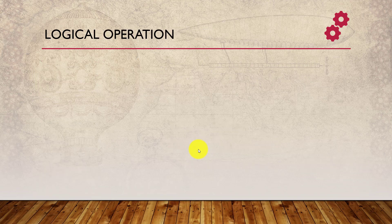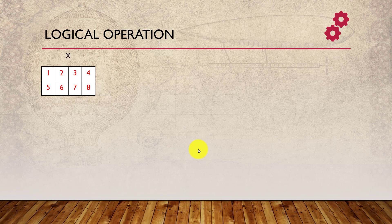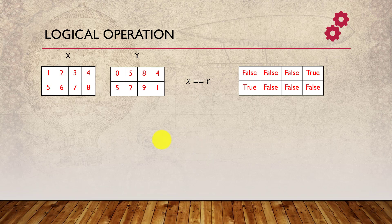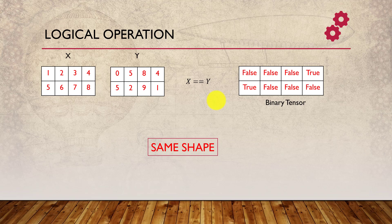We can also create binary tensors using logical operations. For example, x == y or x != y will create a tensor of True and False values by checking whether corresponding elements are equal. This is called a binary tensor because it holds binary values. Again, the tensors need to be the same shape — I'm stressing this because in the next video we'll see how broadcasting handles cases where tensors are not the same shape.